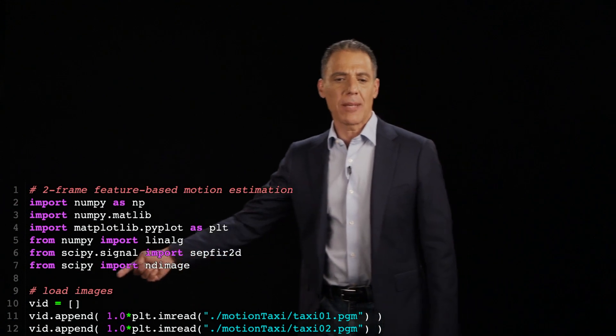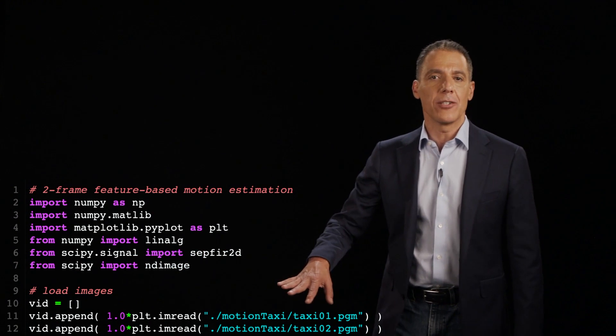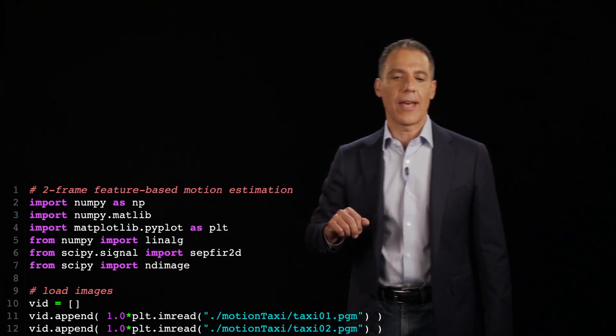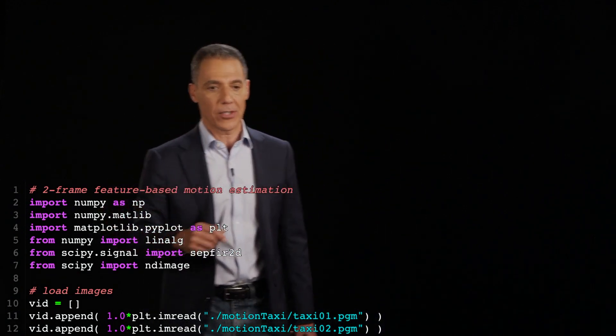By the way, I'm multiplying by 1.0 here because I want to convert these integer values into floating point values, hence the multiplication by 1.0, little Python trick for getting floating point values, so I can do floating point calculations.